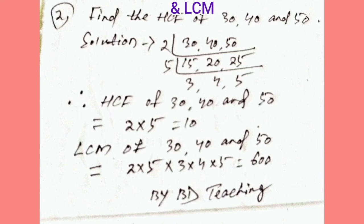So HCF of 30, 40 and 50 equals 2 multiplied by 5, which equals 10. And LCM of 30, 40 and 50 equals 2 multiplied by 5 multiplied by 3 multiplied by 4 multiplied by 5, which equals 600.